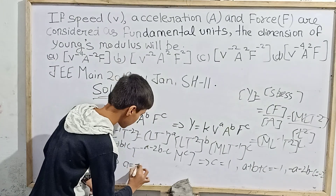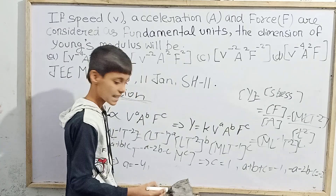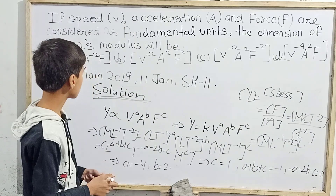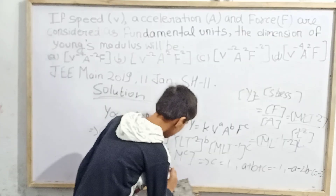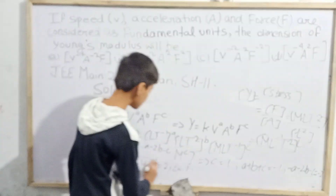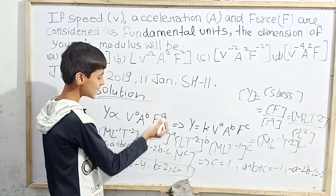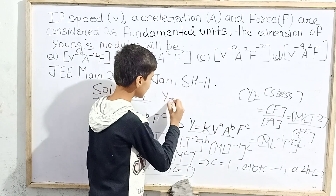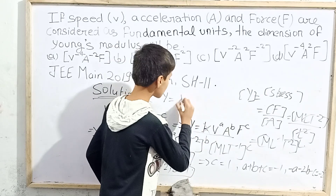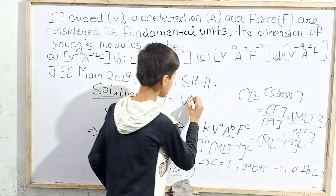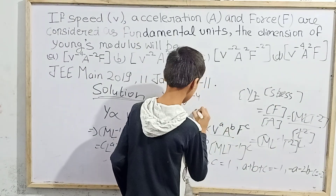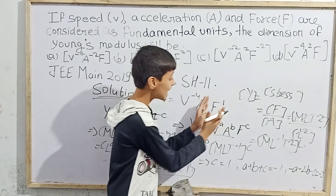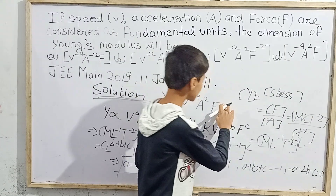With c = 1 already found, substituting into the equations gives a = −4 and b = 2. So the three values are: a = −4, b = 2, c = 1. Therefore Y = v^(−4) · a² · f¹. Since c = 1, we can simply write f without the exponent.